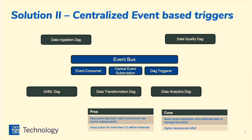The second approach was to bring an event bus in the middle, where all communication happens through events. An event bus is a message queue. We could build some central components like event consumers that trigger DAGs, and use a central event subscription to augment the intelligence of the event bus, facilitating communication across different apps.